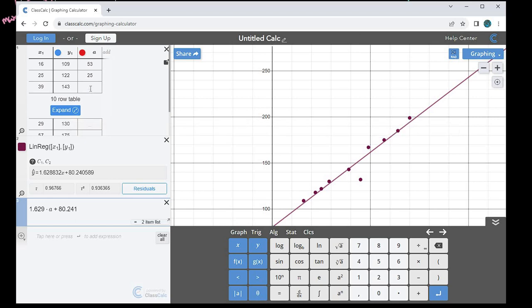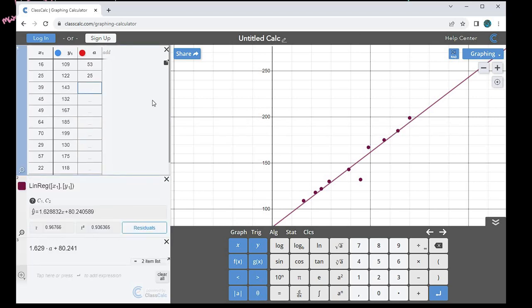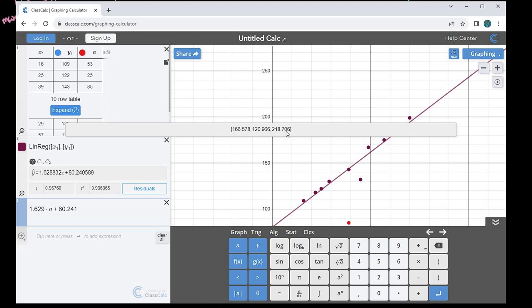Notice that if I did go back up here and plugged in that 85, because I could plug it in, it now gives me a three-item list. And I can see that it returns all three values. This one, again, is not meaningful because we're extrapolating. You want to make sure that you look for values that are not meaningful, because your technology will go ahead and give you an answer for it.